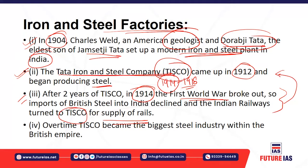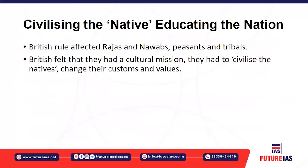Since the World War continued from 1914 to 1918, by that time TISCO had become the biggest steel industry within the British Empire. TISCO supplied a vast amount of steel, iron, and rails to the Indian Railways, which benefited both Britain and TISCO and helped it become the largest steel industry in the subcontinent within the British Empire.